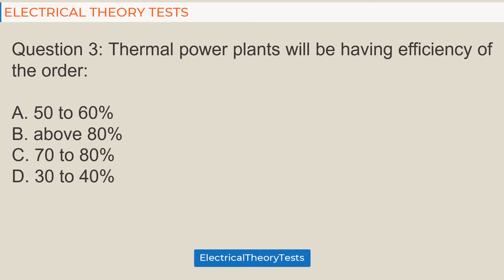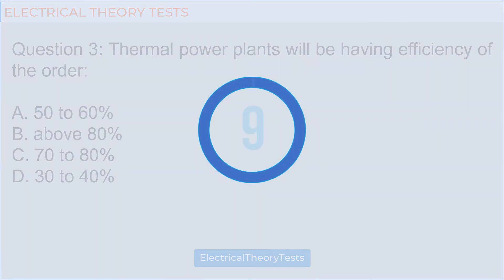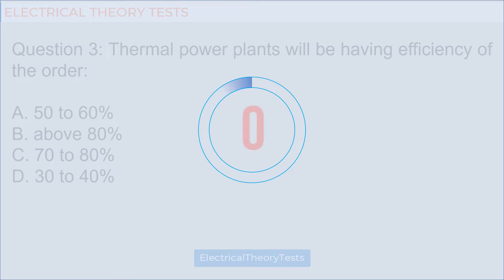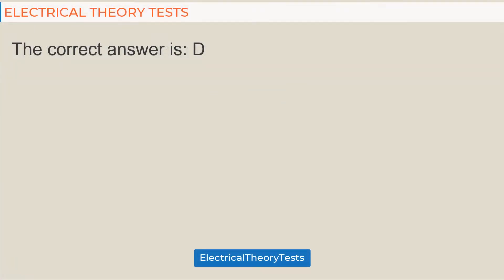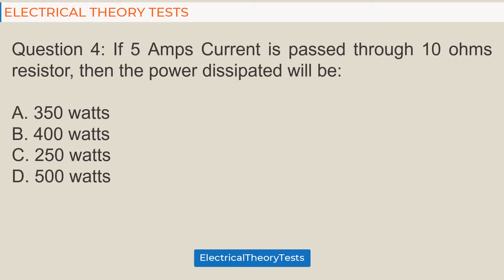Question 3: Thermal power plants will have efficiency of the order of — a) 50 to 60 percent, b) above 80 percent, c) 70 to 80 percent, d) 30 to 40 percent. The correct answer is d) 30 to 40 percent.